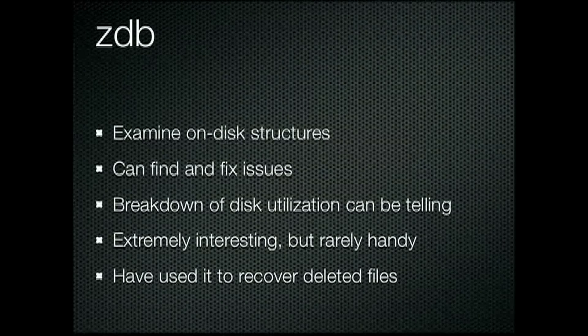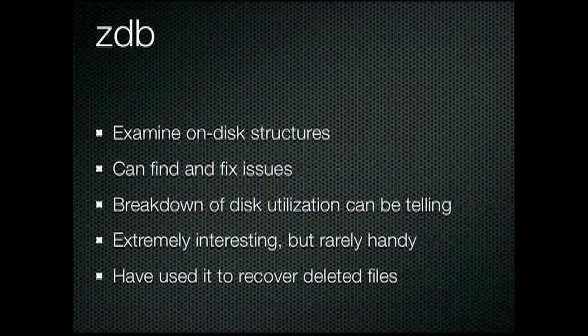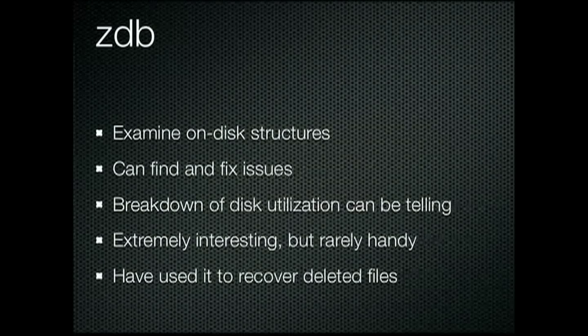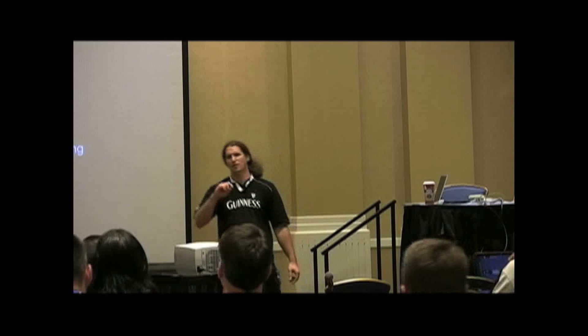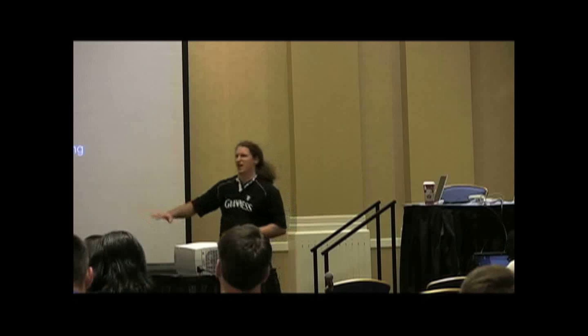One other tool this isn't necessarily an observability tool in the first rank but ZDB the ZFS debugger. If there was an FSCK for ZFS this would be it. It allows you to examine and in some cases correct on disk structures. It can help you find and fix issues. It really was nice because it will give you this complete breakdown and count of all objects. In ZFS it really is just a collection of different types of objects that are interrelated and it can break all this down very nicely for you and give you an idea of where going. It's extremely interesting and it's yet another one of these tools you can kind of lose your life to because it's just so cool and fun to play. But it's very rarely actually handy when a real problem arises and you think why I don't know what it's doing maybe I should use ZDB. You don't need it.